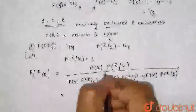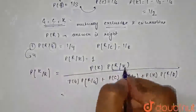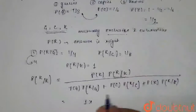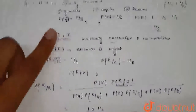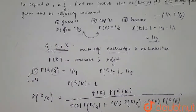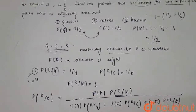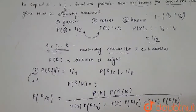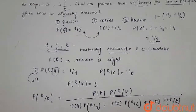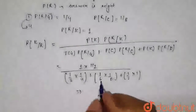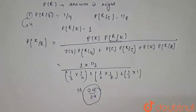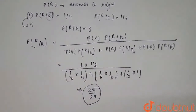Solving this: P(R|K) = 1, and P(K) = 1/2, so numerator is 1 × 1/2. Denominator is (1/3 × 1/4) + (1/6 × 1/8) + (1/2 × 1). Working this out, we get the answer as 24 by 29, which is the probability that he knew the answer given the answer was right. Thank you.